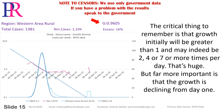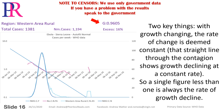The critical thing to remember is that growth initially will be greater than one and may indeed be two, four, seven or more times per day — that's huge. But far more important is that the growth is declining from day one. With growth changing, the rate of change is deemed constant. That straight line through the contagion shows growth declining at a constant rate, so a single figure less than one is always the rate of growth decline.